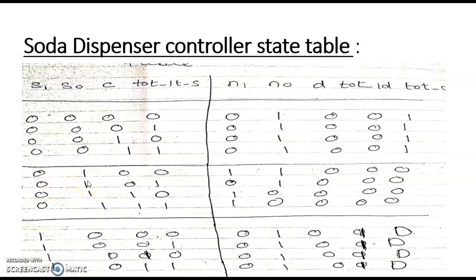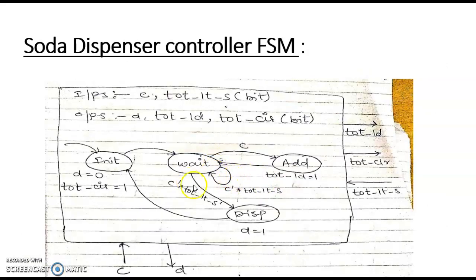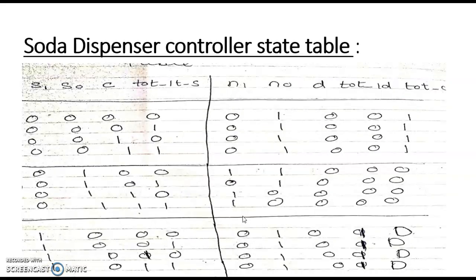After coming into the wait state, there are some possibilities. When in the wait state, if C is 1 — regardless of whether TOT_LTS is 1 or 0 — it will enter the next state, which is the add state (10), and do the addition. If it is in the 01 state and coin is 0, it needs to check whether the TOT value is more or less than S. If TOT_LTS is 1, that means TOT is less than S, so it remains in the same state waiting for more coins. But if TOT_LTS is 0, it enters the next state: 10.